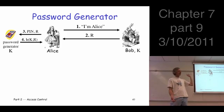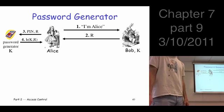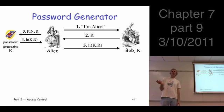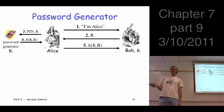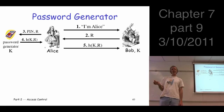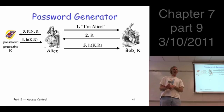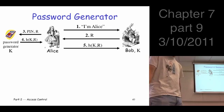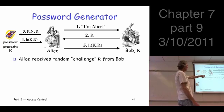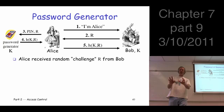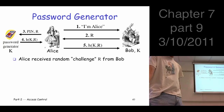Alice sends that value back to Bob. Bob knows K, he knows R, he can hash those two and check to see if he gets the same value. If he does, it tells him whoever sent this must know the key K. Who knows the key K? Only somebody who has this password generator, and the only person who has that is Alice. So it must be Alice — that's what's supposed to convince him. We can call R a challenge sent from Bob: 'Prove that you're really Alice, who you claim to be.'